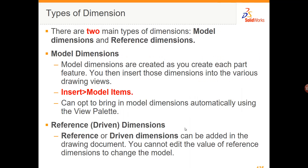There are two main types of dimensions in SolidWorks: model dimensions, and reference dimensions or driven dimensions. Model dimensions come in from your model — the dimensions you added in your sketches and when creating features — and you can bring those into your drawing using Insert Model Items. Reference or driven dimensions are dimensions that you add in the drawing. These can be edited but they don't actually drive the geometry, whereas model dimensions can be used to change your geometry from the drawing.